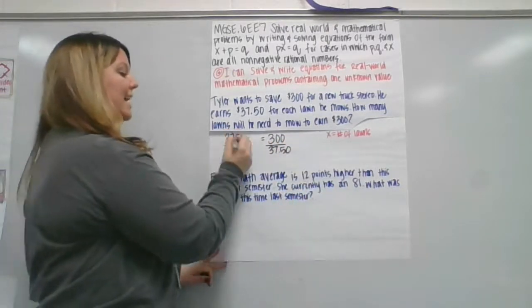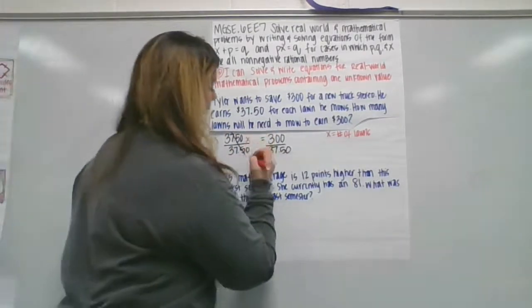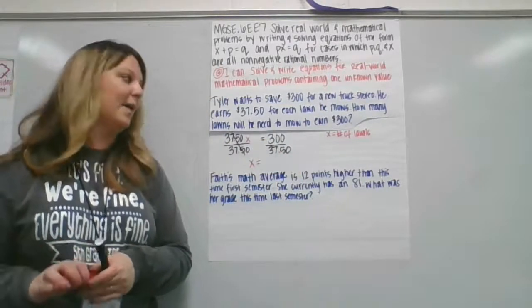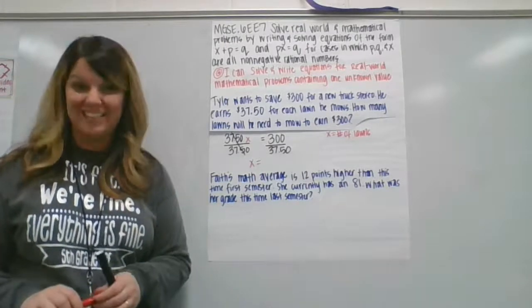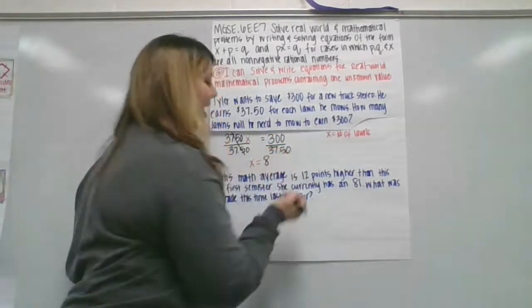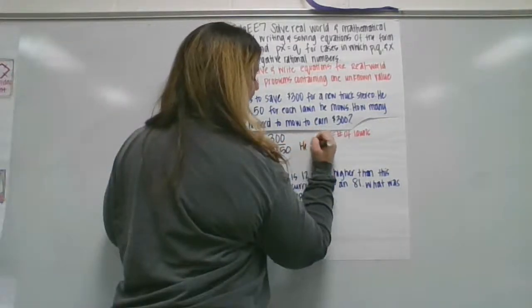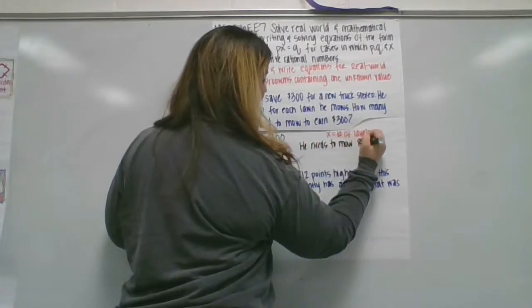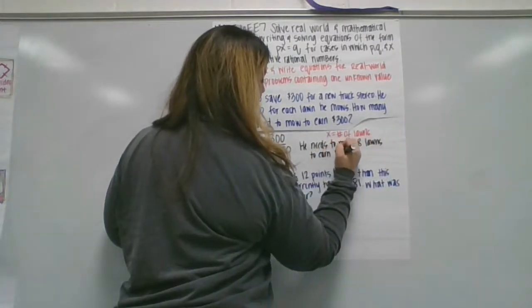And we're left with x equals basically the quotient of $300 divided by $37.50. Now, to save a little time, $300 divided by $37.50 is 8. So the answer to this equation would be x equals 8, and he needs to mow 8 lawns to earn $300.